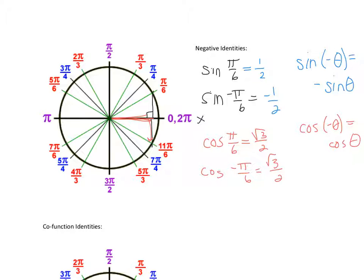The x values are still going to be the same whether you go up or down. So if you go to negative 135 degrees, the x values are still the same as going to positive 135 degrees.